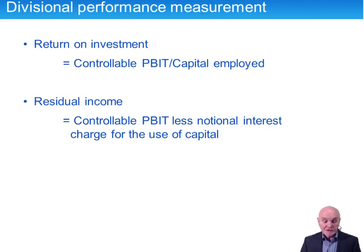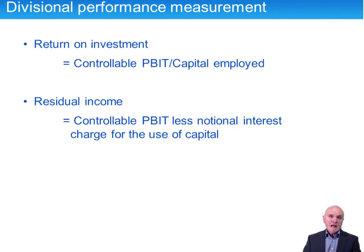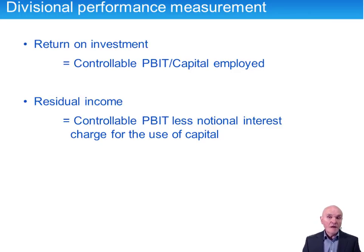There are two main approaches to divisional performance measurement. The first is return on investment, which is very like return on capital employed. Head office is investing money into those divisions, and we're looking at the earnings which the divisions make, expressing that as a percentage of the capital employed. It is controllable profit before interest and tax, divided by the capital employed.